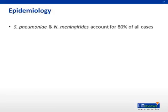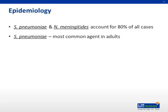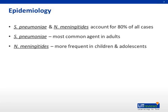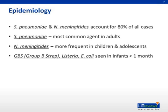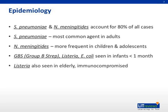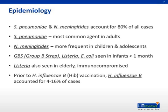As far as epidemiology, Strep pneumo and Neisseria meningitidis account for about 80% of all cases in general. You'll see Strep pneumoniae more common in adults, and Neisseria meningitidis more frequently in children or adolescents, though these are not hard and fast rules. You'll tend to see Group B strep, Listeria, and E. coli in infants less than one month of age, and Listeria as well in elderly or immunocompromised patients. Prior to the H. influenzae B vaccination, H. influenzae B actually accounted for 4% to 16% of all cases. Based on this epidemiology trend, you can decide how to antibiose patients based on their age.